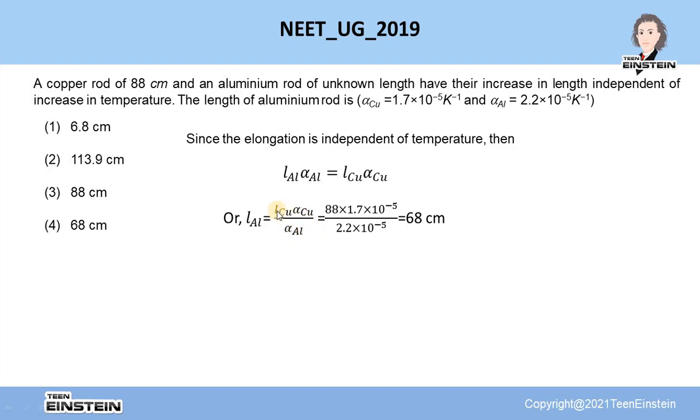These values are given. The length of the copper is also given. If we put all those and do the calculation properly, we will get that the length of the aluminum rod will be 68 cm.